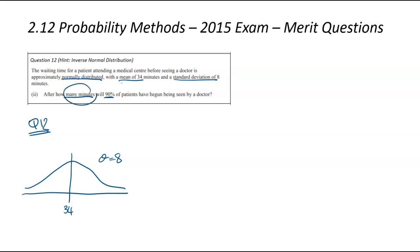After how many minutes will 90% of patients be seen by a doctor? When we're starting a normal distribution question, you should be looking to draw a normal distribution curve and putting in all the information that you know. So we were told that the mean is 34, and we were told that the standard deviation is 8. We were then told about how many minutes, that's normally along the x-axis, and that's the unknown that we're trying to find out. That will be our x.